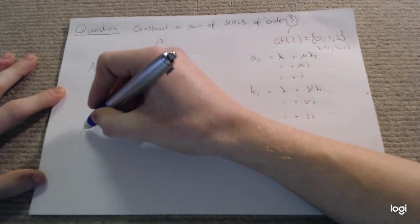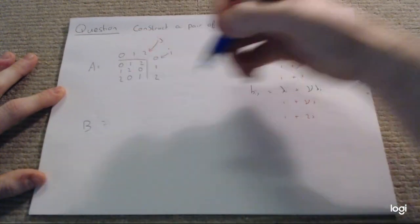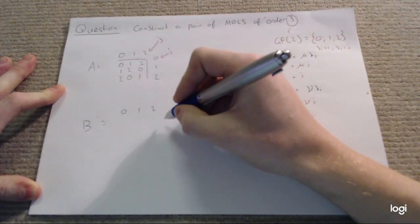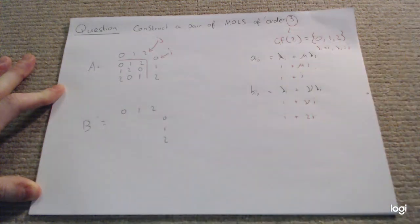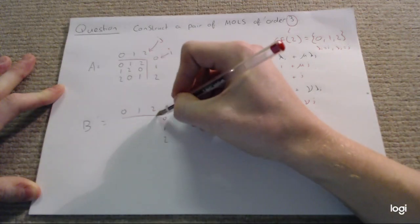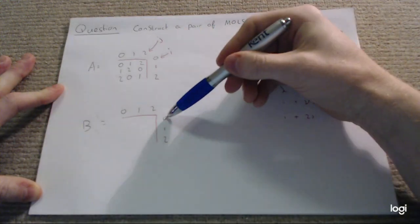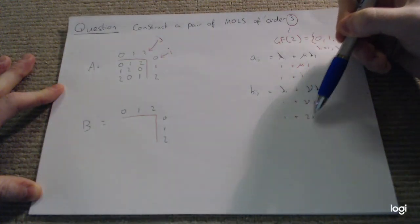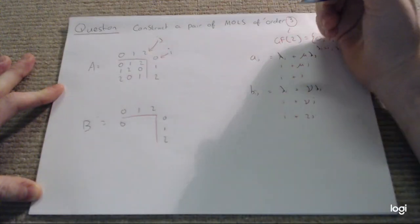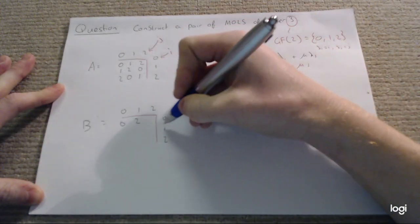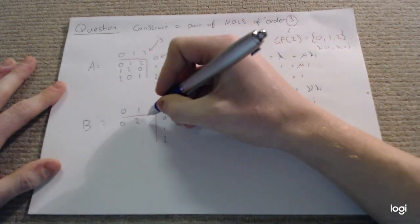Our second Latin square we'll call B, and we're going to use this second equation now. Setting up the same notation. We have 0 plus 2 lots of 0 for this first bit, obviously 0. 0 plus 2 lots of 1 is 2, and 0 plus 2 lots of 2 is 4, which again is equivalent to 1.